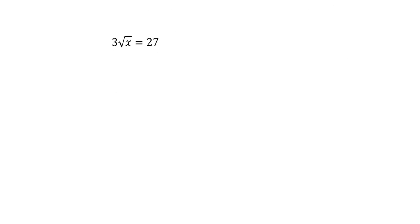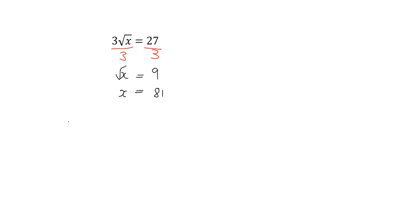Let's look at another one: 3 times the square root of x is equal to 27. You've got 3 times the square root of x, so you want to get rid of that 3. You do the inverse operation, which is to divide by 3. You get that the square root of x is equal to 9. Then to get rid of a square root, the inverse operation is to square. So x must be equal to 81, because the square root of 81 is 9.